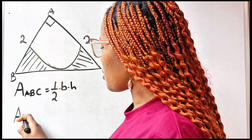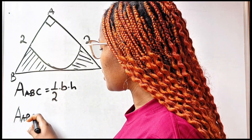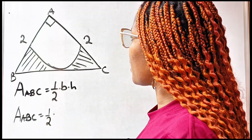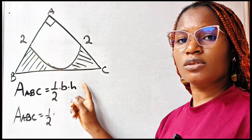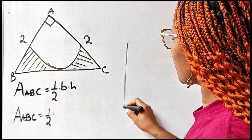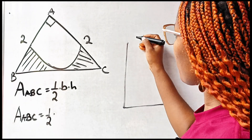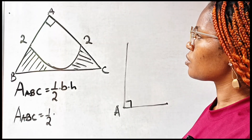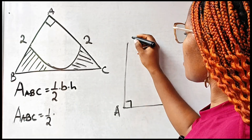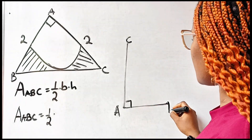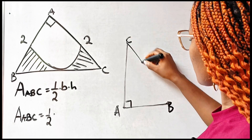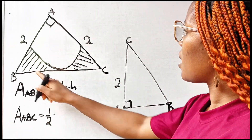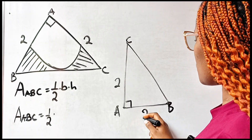Therefore, the area of triangle ABC will be equal to half multiplied by... So if we redraw this, we should have something like this, whereby point A is our right angle. So that means this point is C and this is B. So we are going to have something like this. You can see that AC is 2 and AB is 2 as well.